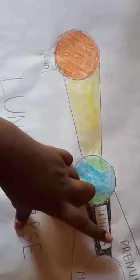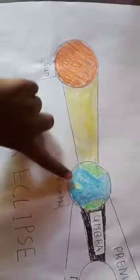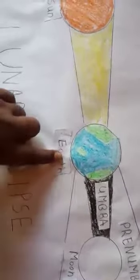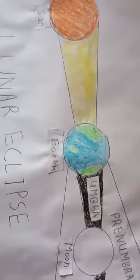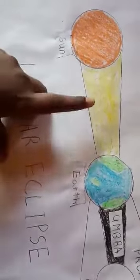But some sunlight is able to pass through the earth's atmosphere and it, the moon giving it an orange color.